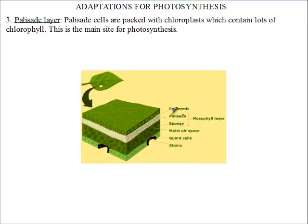From the epidermis we go to the palisade layer. This is made up of palisade cells, which are what you usually call the typical plant cells. These cells are packed with chloroplasts, and these chloroplasts contain lots of chlorophyll. Clearly, if there are lots of chlorophyll in the palisade layer, then more photosynthesis will take place there — so it is the main site for photosynthesis.